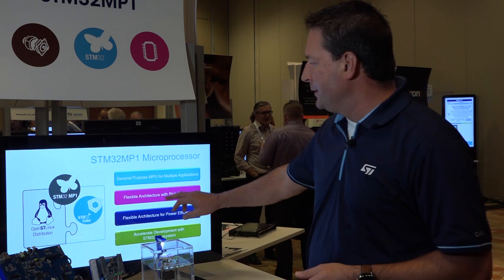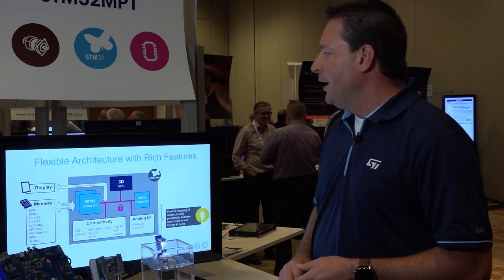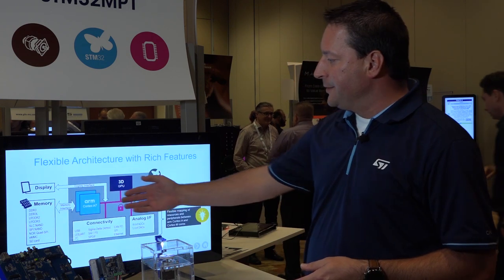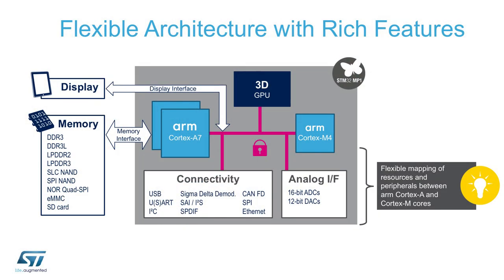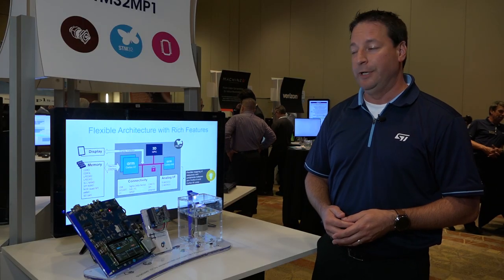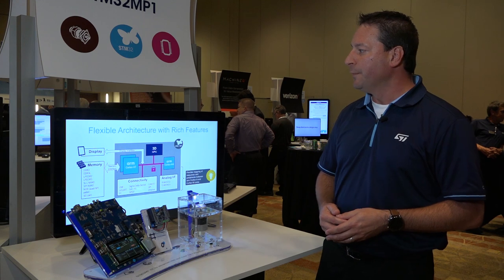If we take a look at the architecture, it's a single or dual ARM Cortex-A7, which is where you would be running Linux, and an ARM Cortex-M4, which is where you would be running an RTOS or bare metal. We also integrated an OpenGL compliant 3D graphics core.